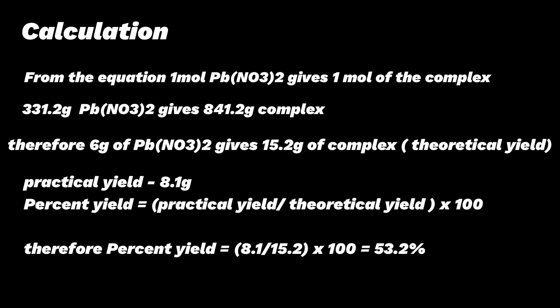1 mol of lead(II) nitrate gives 1 mol of the complex. So 331.2 g of lead(II) nitrate should give 841.2 g of the complex. These are the molar masses of the compounds.